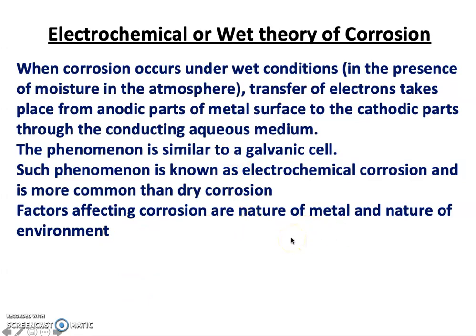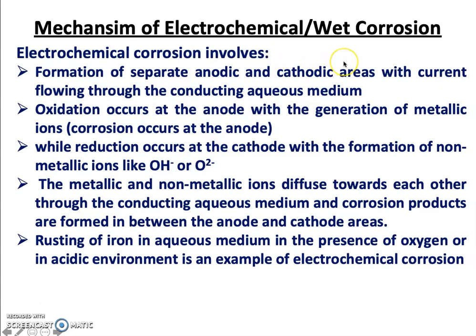Factors that affect corrosion include the nature of the metal and the nature of the environment. In the mechanism of wet corrosion, just like a galvanic cell, one part of the metal surface behaves as an anode and another part as a cathode, with current flowing through the conducting aqueous medium. Oxidation occurs at the anode generating metallic ions, while reduction occurs at the cathode forming non-metallic ions like OH⁻ or O²⁻. The metallic and non-metallic ions diffuse toward each other and corrosion products form between the anode and cathode. Rusting of iron in the presence of water, oxygen, or an acidic environment is an example of wet or electrochemical corrosion.